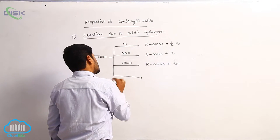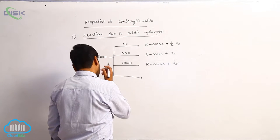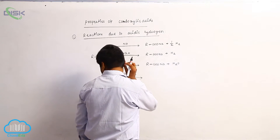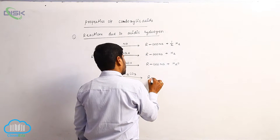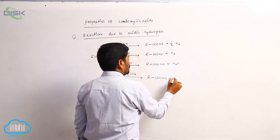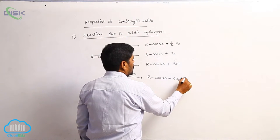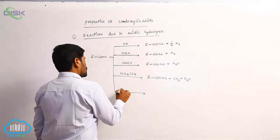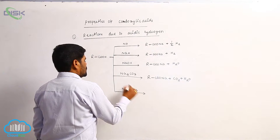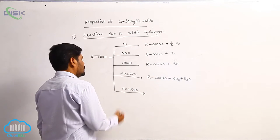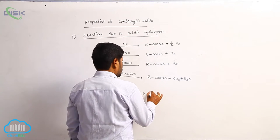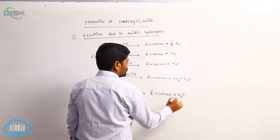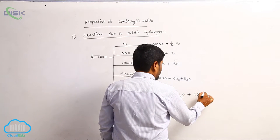Carboxylic acids also react with sodium carbonate to form sodium carboxylate, carbon dioxide, and H2O. Because these are stronger organic acids, they also react with sodium bicarbonate to form sodium carboxylate, H2O, and CO2 effervescence.